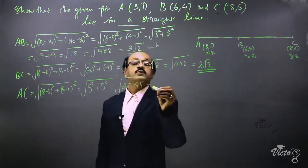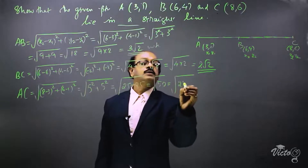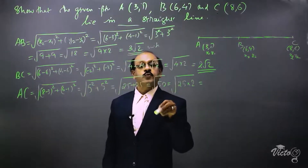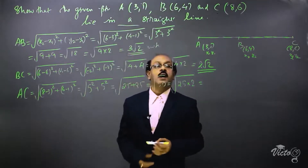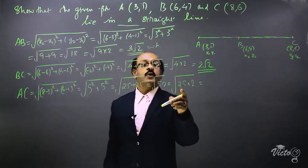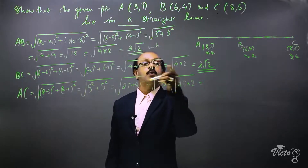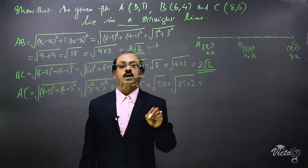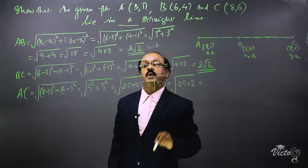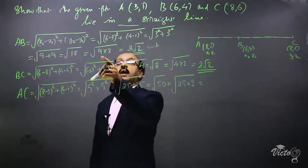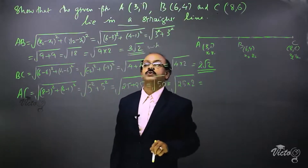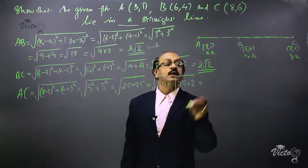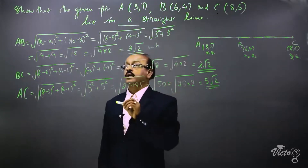We split 50 as 25 × 2 because 25 has a perfect square root. We do not split it as 10 × 5 because neither 10 nor 5 has a perfect square root. Similarly, 18 is split as 9 × 2 (not 6 × 3) because 9 has a perfect square root. So √50 = 5√2, and √8 = 2√2, and √18 = 3√2. Therefore AC = 5√2 units.